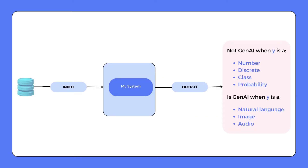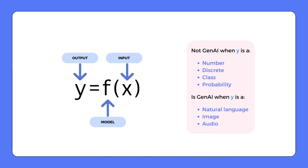The nature of the output plays a crucial role in differentiating between generative AI and other models. Traditional models typically produce categorical or numerical outputs, such as whether an email is spam or not, or predicting sales figures. On the other hand, generative AI can produce outputs like written or spoken language, images, or even audio, reflecting its ability to generate content that mimics reality.